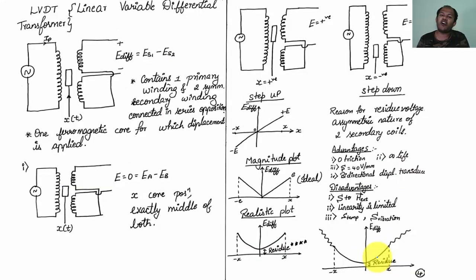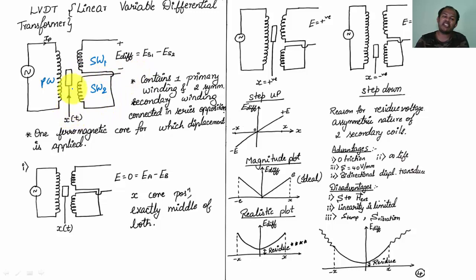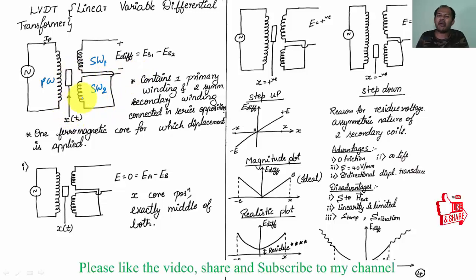LVDT — Linear Variable Differential Transformer — is asked in almost every exam. Its construction consists of one primary winding and two secondary windings (SW1 and SW2). The voltage across SW1 is ES1 and across SW2 is ES2. It contains one primary winding and two symmetric secondary windings connected in series opposition, and one ferromagnetic core to which displacement is applied. You measure how much movement has been made with the help of LVDT.